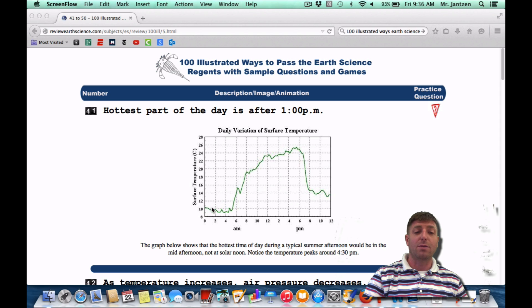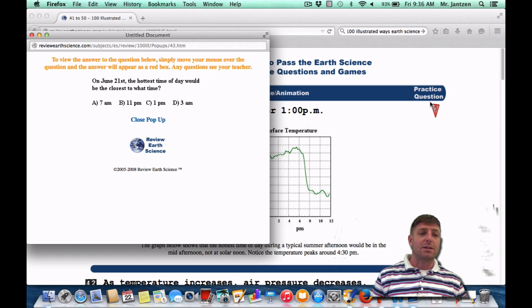Number 41, the hottest part of the day is after 1 p.m. That's due to the temperature lag. The sun's most intense insolation is solar noon, but due to a temperature lag, it's actually not going to be hottest until around 1 o'clock. Kind of like a bank account - if you put $20 into your bank account and then take out $10, you still have a surplus of money, just like you have a surplus of energy around 1 o'clock. If we want to see this as a practice question on the Regents, on June 21st, the hottest time of day would be closest to what time? It's not going to be solar noon. It's going to be around 1 o'clock or choice C.